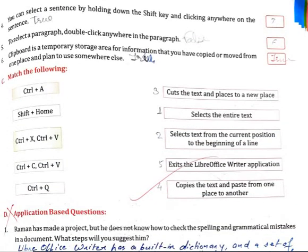Match the Following. Ctrl+A — Select the entire text. Shift+Home — Select text from the current position to beginning of line. Ctrl+X and Ctrl+V — Cut the text and place it to the new location. Ctrl+C and Ctrl+V — Copy and paste. Ctrl+Q — Exit the LibreOffice Writer application.